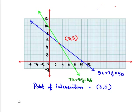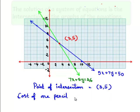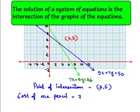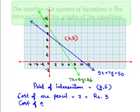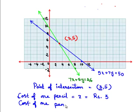We assumed the cost of one pencil is x, so x equals 3, meaning the cost of one pencil is 3 rupees. The cost of one pen was assumed as y, and y equals 5. Hence, the cost of one pencil is 3 rupees and the cost of one pen is 5 rupees. This ends our solution.